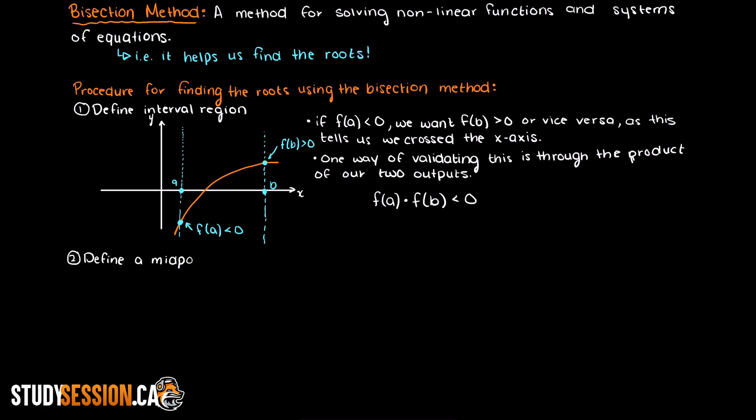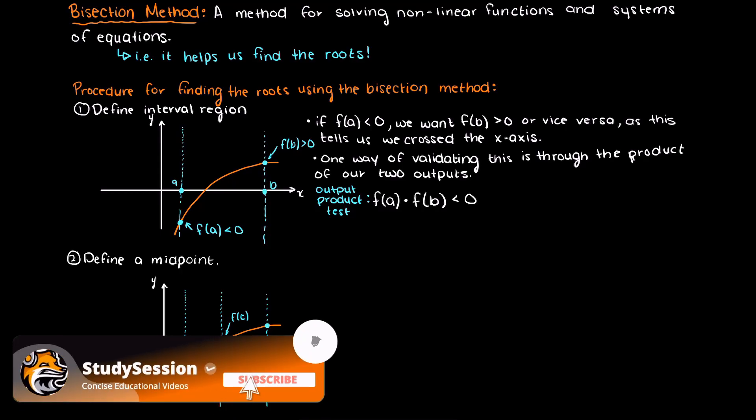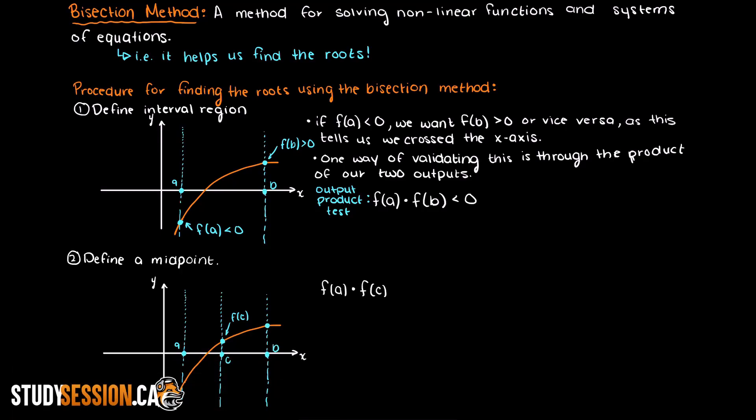Now step 2, we find the middle of our previous two inputs and define a new point in the middle. We can do this by adding input a and b together and then dividing by two. This value will be our new midpoint value. Now we can apply the previously talked about output product test. So we take the output of input a times the output of input c and see if the product of these two values is less than zero. If so, that ensures the root is to the left of our midpoint c.